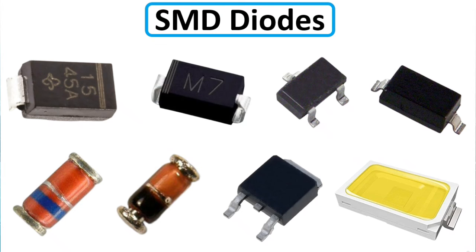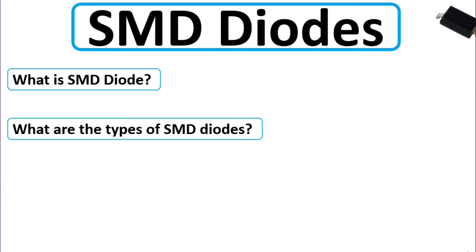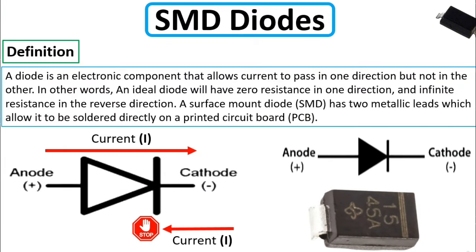I'm going to teach you how to test all types of SMD diodes using the multimeter. But first, let's answer some questions: What is an SMD diode? A diode is an electronic component that allows current to pass in one direction but not the other. An ideal diode will have zero resistance in one direction and infinite resistance in the reverse direction. A surface mount diode SMD has two metallic leads which allow it to be soldered directly on the printed circuit board PCB.